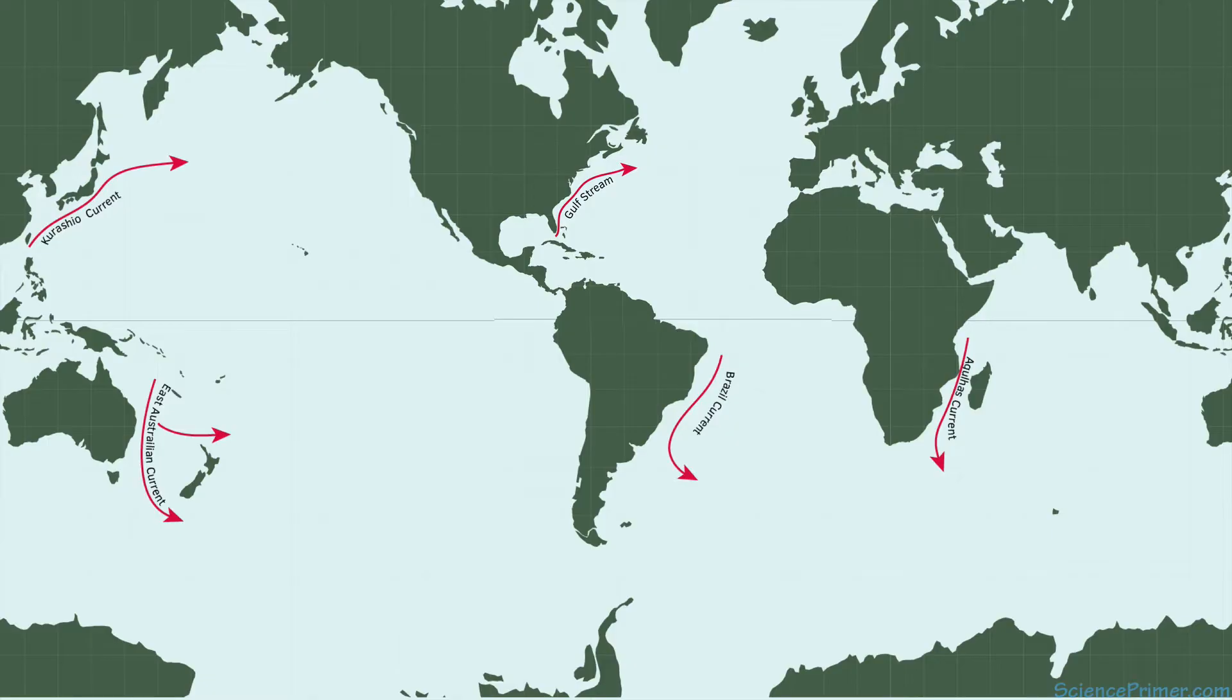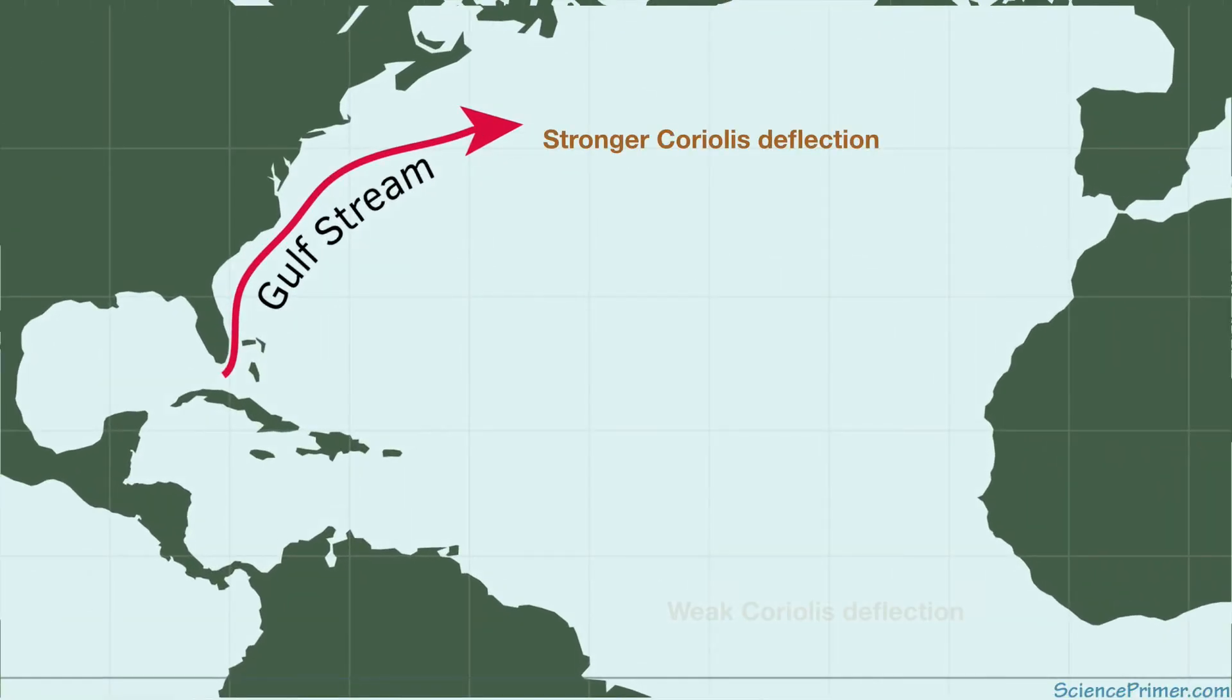The cause of western boundary intensification is the way Coriolis deflection changes with latitude. The Coriolis effect is strongest at the poles and weakest close to the equator. Therefore, the degree to which objects in motion turn due to Coriolis varies with latitude.